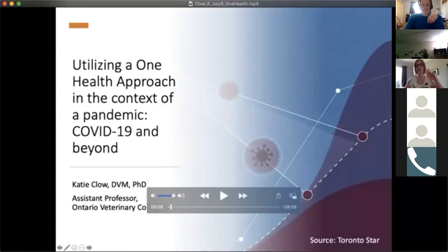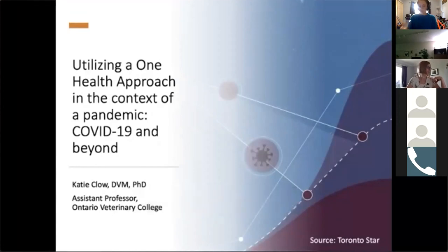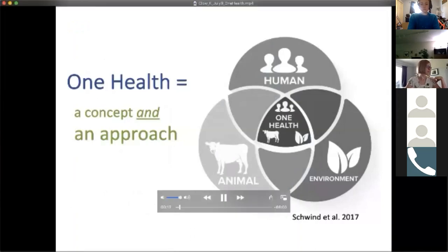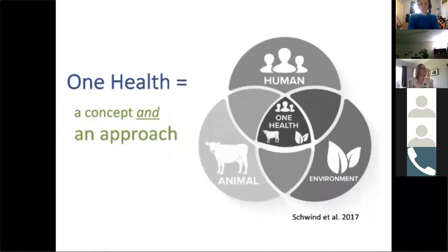This is about an eight-minute video. I'll play that and then we will come back to start our discussion. One Health is defined as both a concept and an approach. As a concept, it speaks to the interconnectedness of human health, animal health, and environmental health — and we can have One Health issues that arise at that intersection.